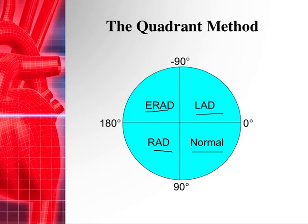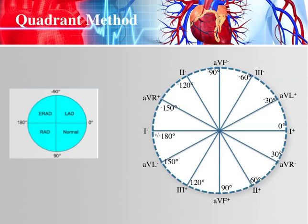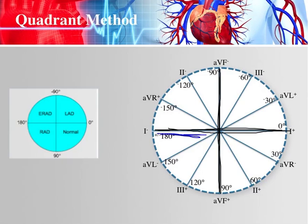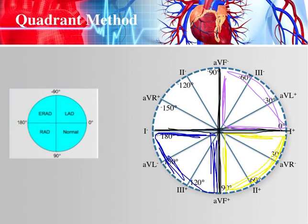Using intuition, we know that something separates these four quadrants — and that would be leads. Looking at the diagram, you can see that AVF and lead one separate the four quadrants. Here's your right axis deviation quadrant, your normal quadrant, your left axis deviation quadrant, and your extreme right axis deviation quadrant. Those two leads — lead one and AVF — separate those four quadrants.